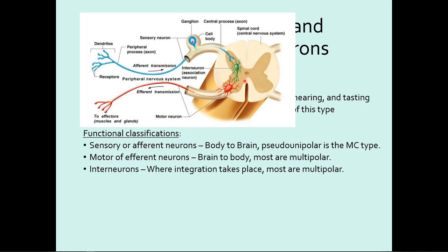Then we have interneurons — the little green ones — which provide communication between the sensory and motor systems. We're integrating: taking information from the body, thinking about it, and potentially acting on it. Think of homeostasis: the afferent neuron is the receptor, and interneurons are the control center — integrating that data and deciding whether to act. For example, if you're too cold, interneurons tell the muscles to start shivering. These are also multipolar, and interneurons make up your brain, connecting the sensory and motor systems.